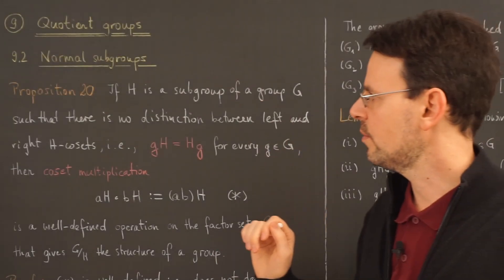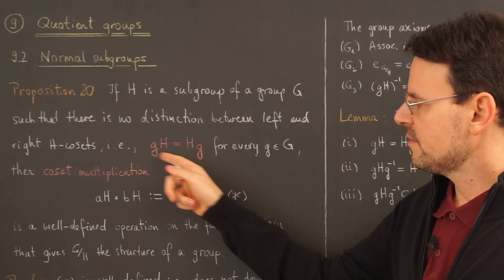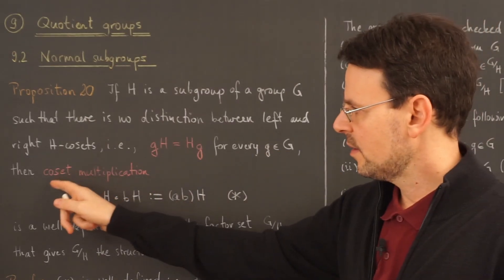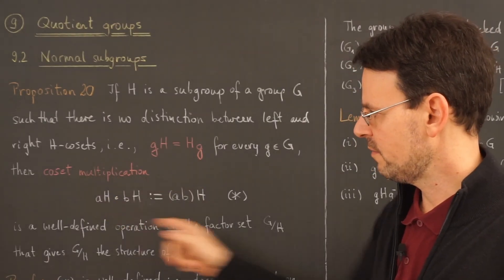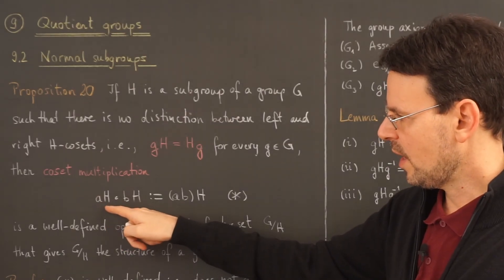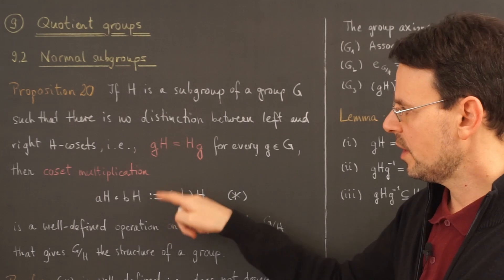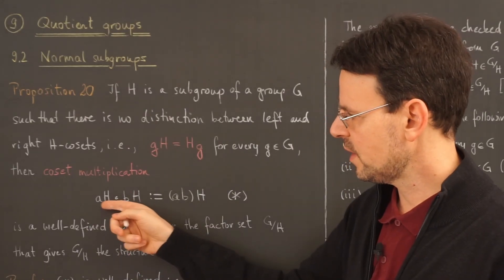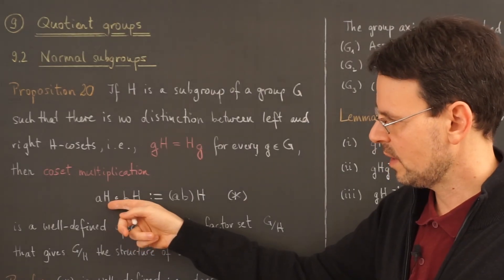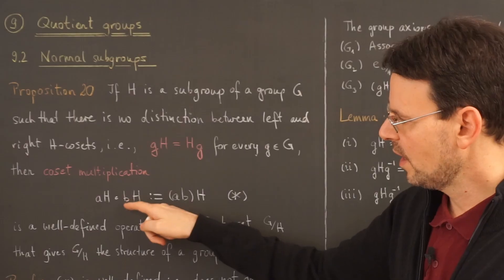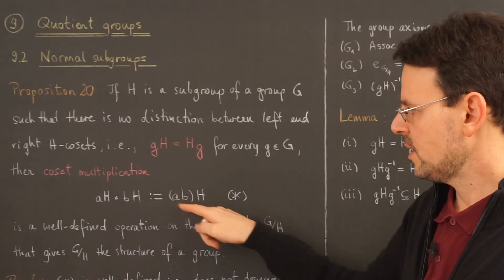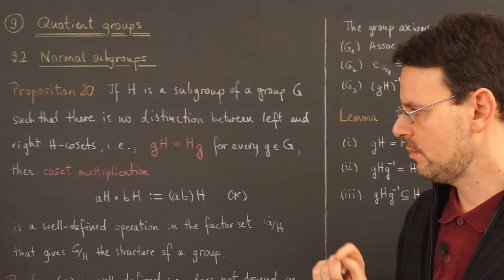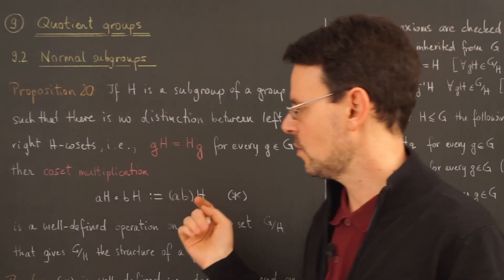Now back to proposition 20. When H satisfies this condition for every g in capital G, the so-called coset multiplication — defined as coset aH times coset bH equals the coset of ab — is well-defined. You take a representative of each coset, their product in G, and then take the left coset of this new element with respect to H. This is coset multiplication.